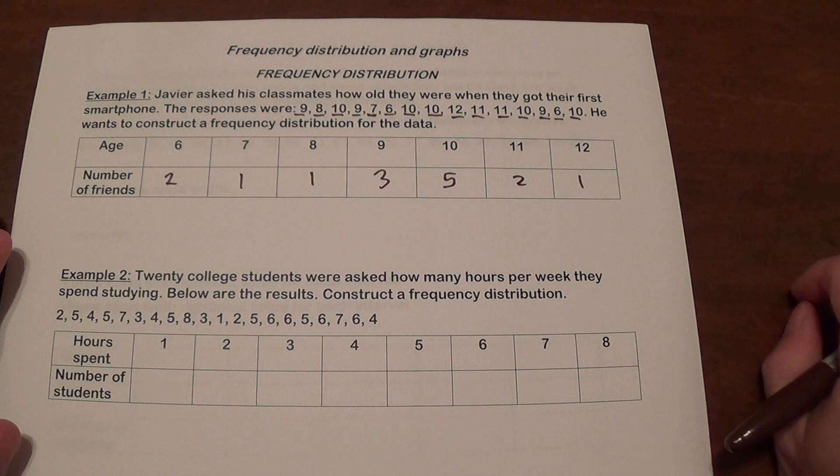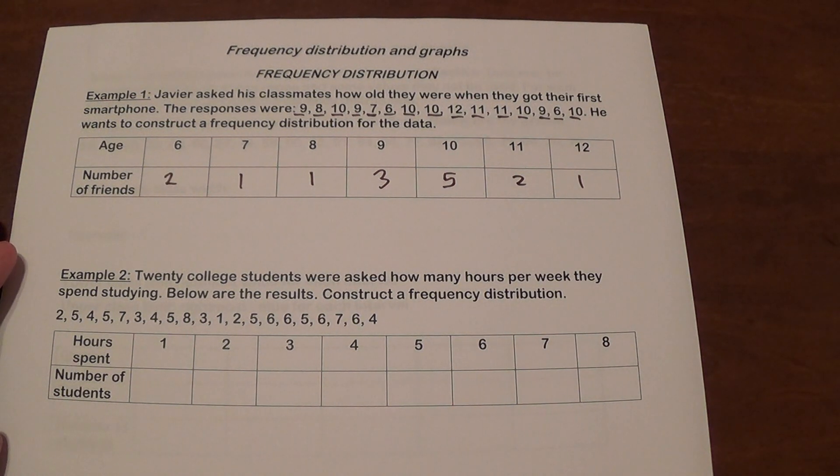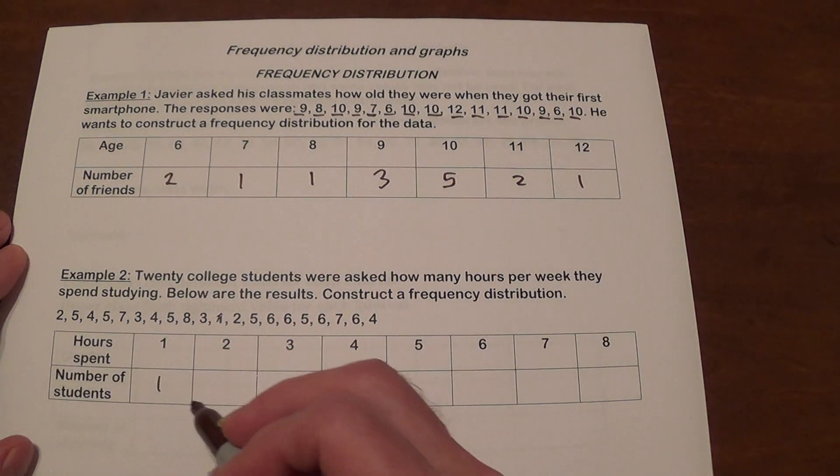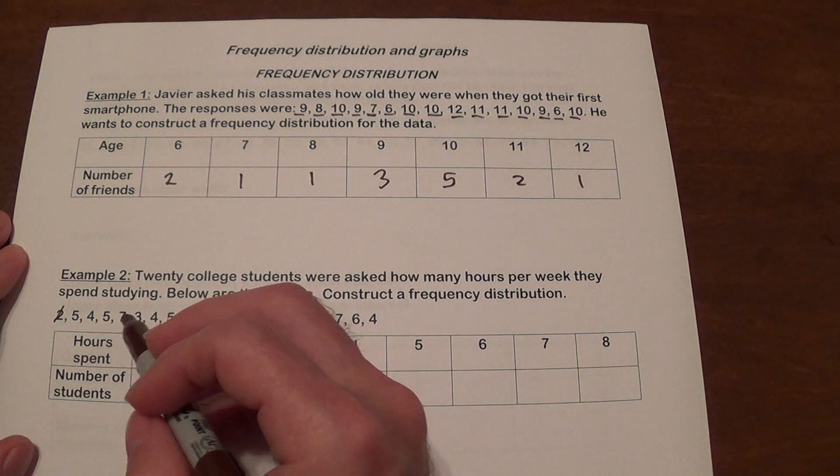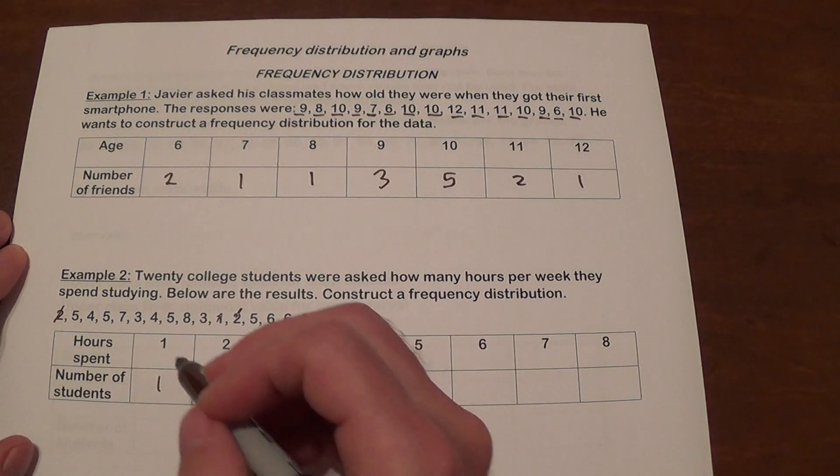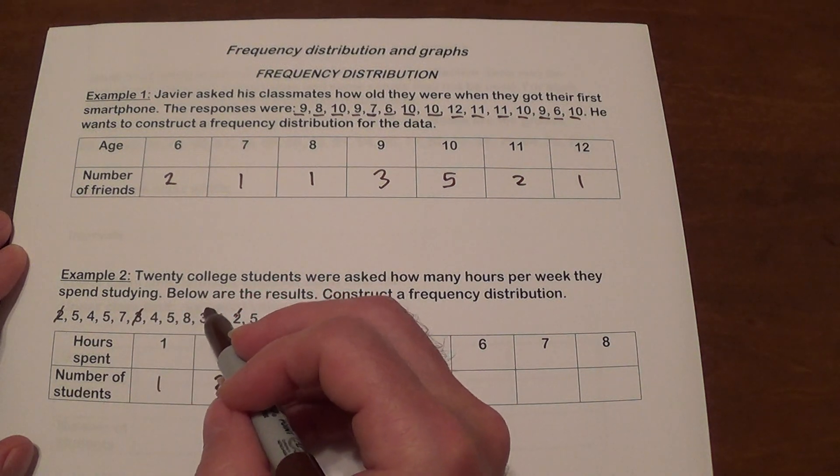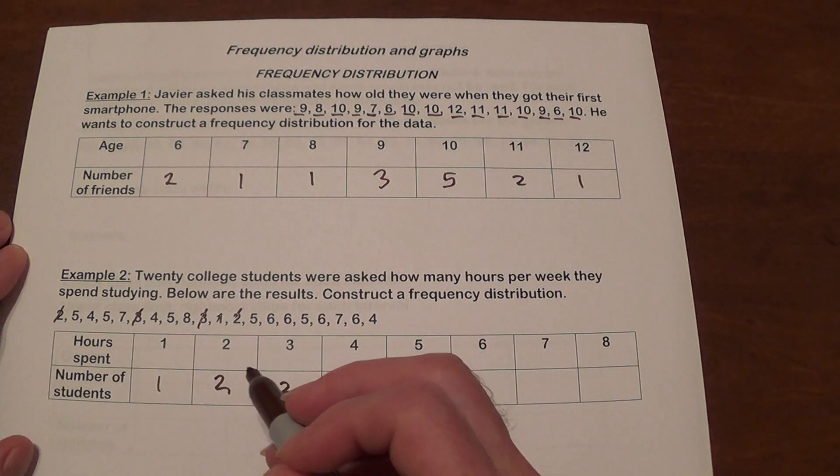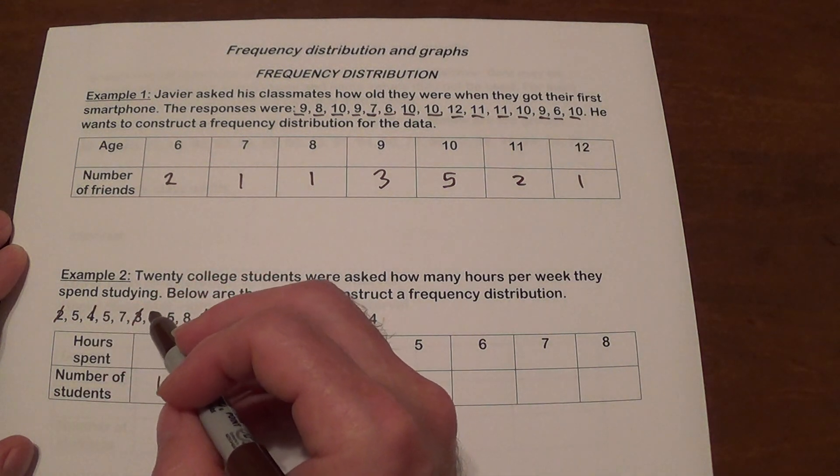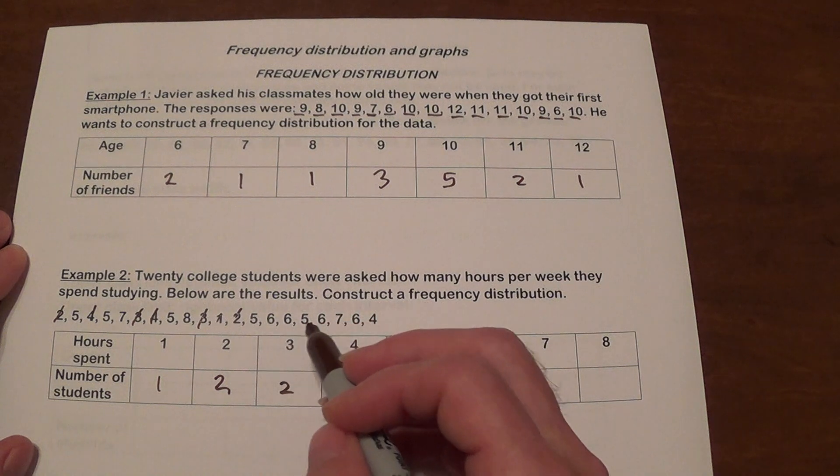Twenty college students were asked how many hours per week they spent studying below the results. We want to construct a frequency distribution. So we're going to do the same thing. Let's begin with finding one. Here's one. Two. Here's also two.